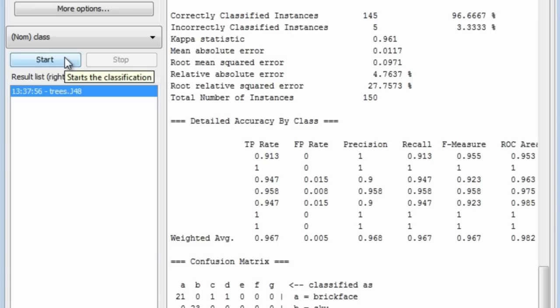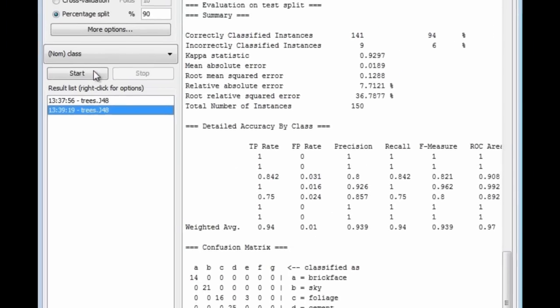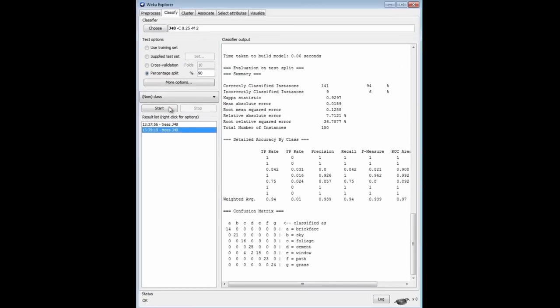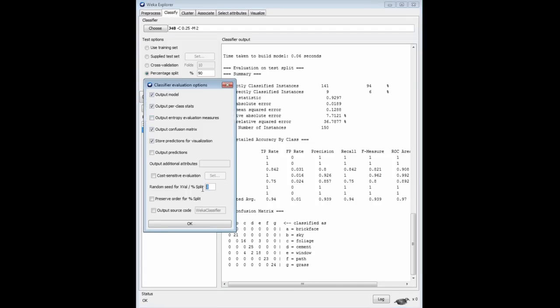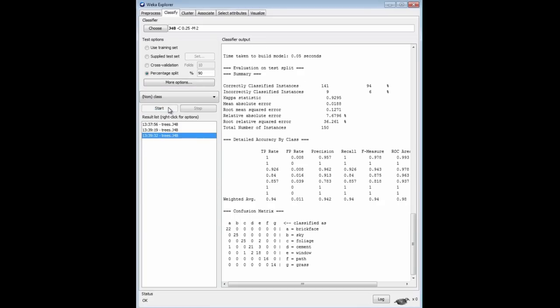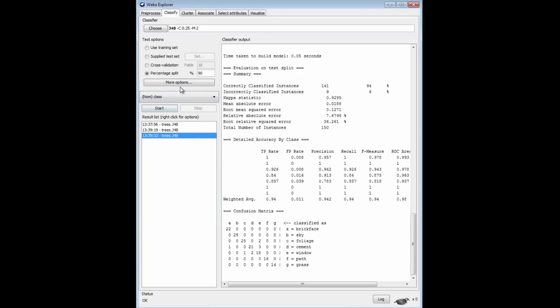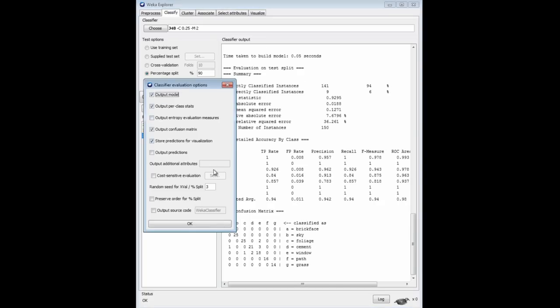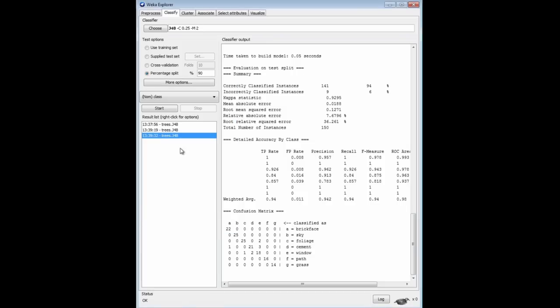Before we had .967, and this time we get .94, 94%. Quite different, you see. If I change this again to 4, and run it again, I get 96.7%.